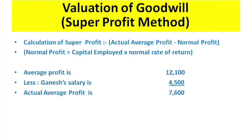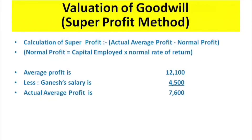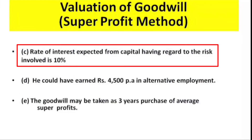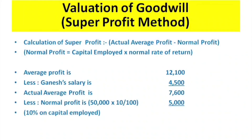Next, we calculate normal profit. Normal profit equals capital employed multiplied by the normal rate of return. Capital employed is ₹50,000 and the expected rate is 10%, so normal profit = ₹50,000 × 10/100 = ₹5,000.